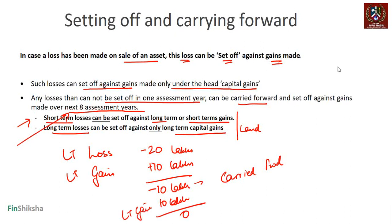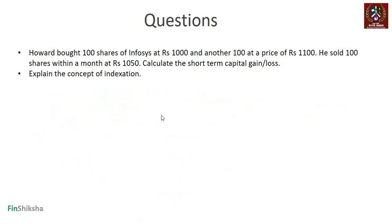There are multiple detailed rules beyond this scope, so you'll need to read further when applying these concepts professionally. That's broadly capital gains covered. As closing questions: Howard bought 100 shares of Infosys at ₹1000 and another 100 at ₹1100; he sold 100 shares within a month at ₹1050 — calculate the short-term capital gain or loss. Also, explain the concept of indexation with an example.